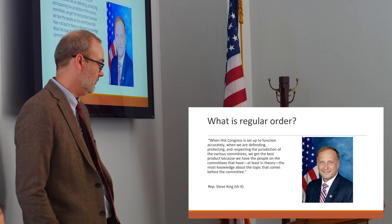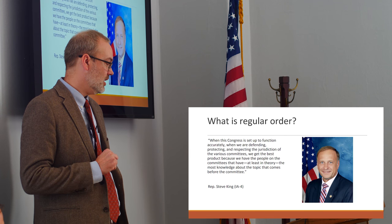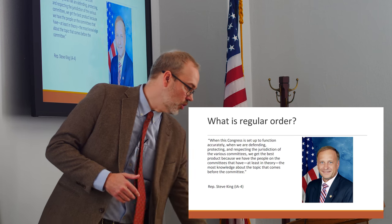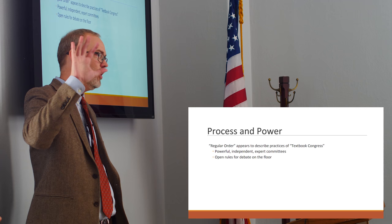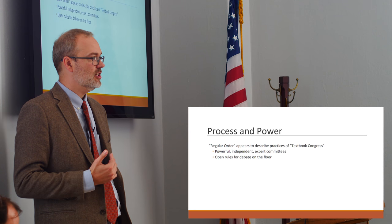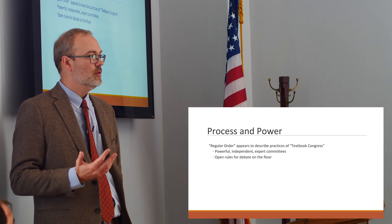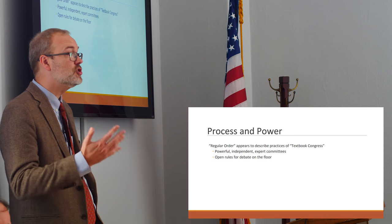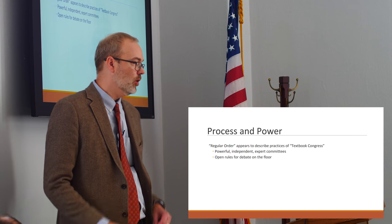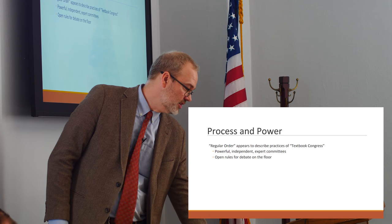Steve King, on the other side of the spectrum, argues: 'When Congress is set up to function accurately — defending, protecting, and respecting the jurisdiction of the various committees — we get the best product, because we have the people on committees who have the most knowledge about the topic.' Looking at these statements, what I hear people calling for is a return to a more decentralized system of legislating: a return to strong committees, and a return to the use of open amendments on the floor, where they have become very scarce in recent years. Those two elements — stronger independent committees and more open amending — represent a return to what we'd call the textbook Congress of the 1950s and 60s.